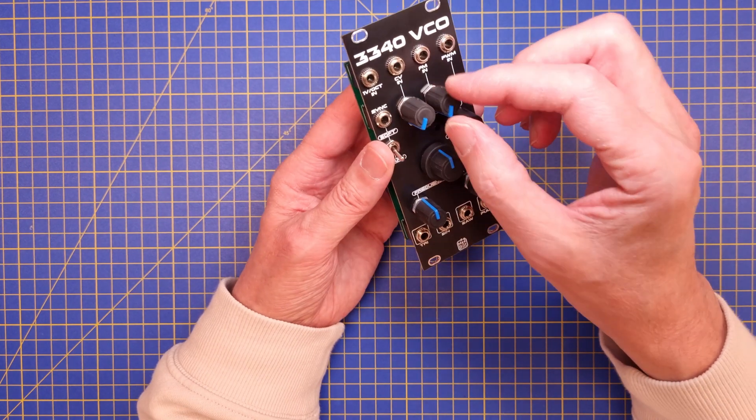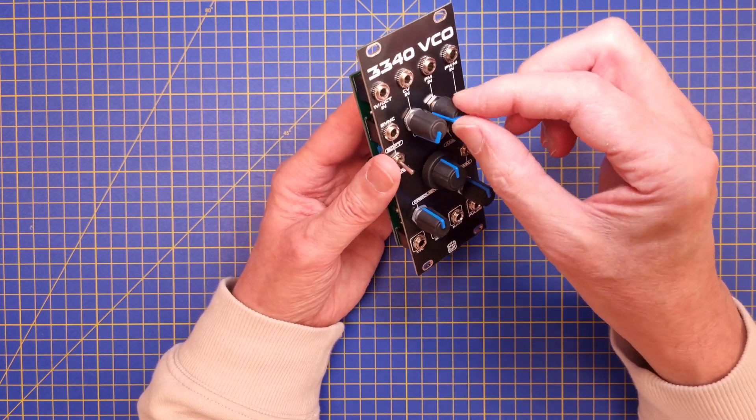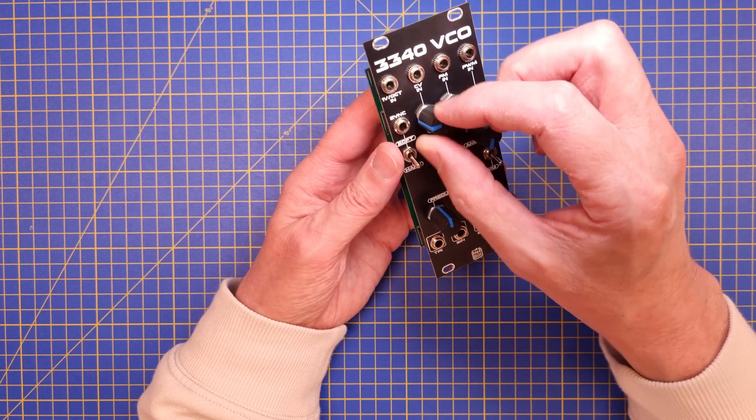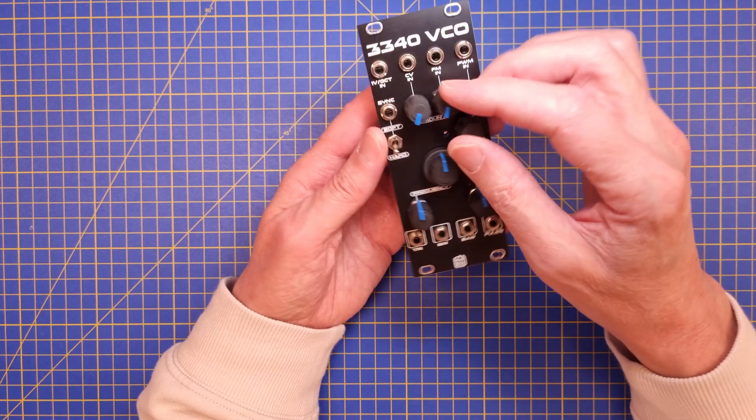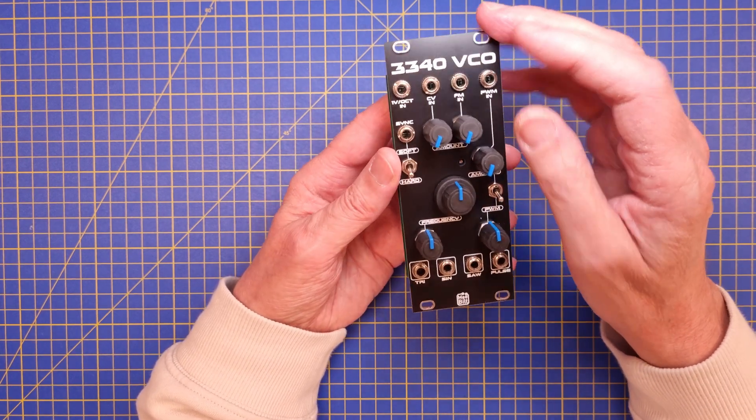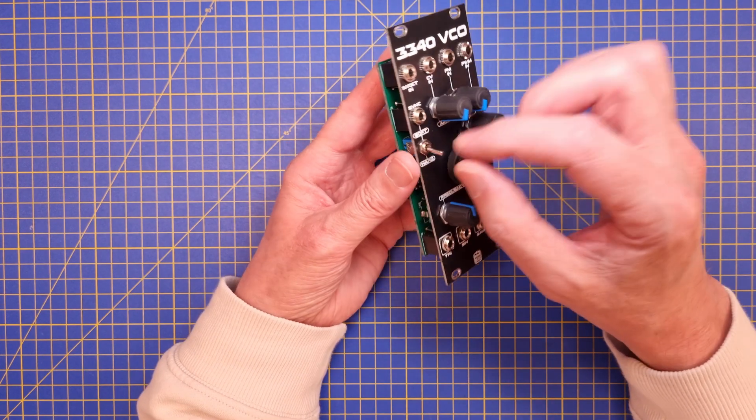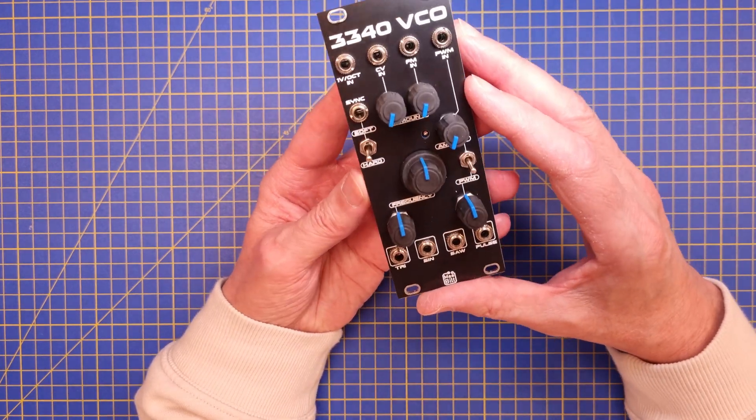There is an FM input with amount knob and also CV input with amount knob as well. There is one single one volt per octave input and a sync input with a switch for selecting soft or hard sync.